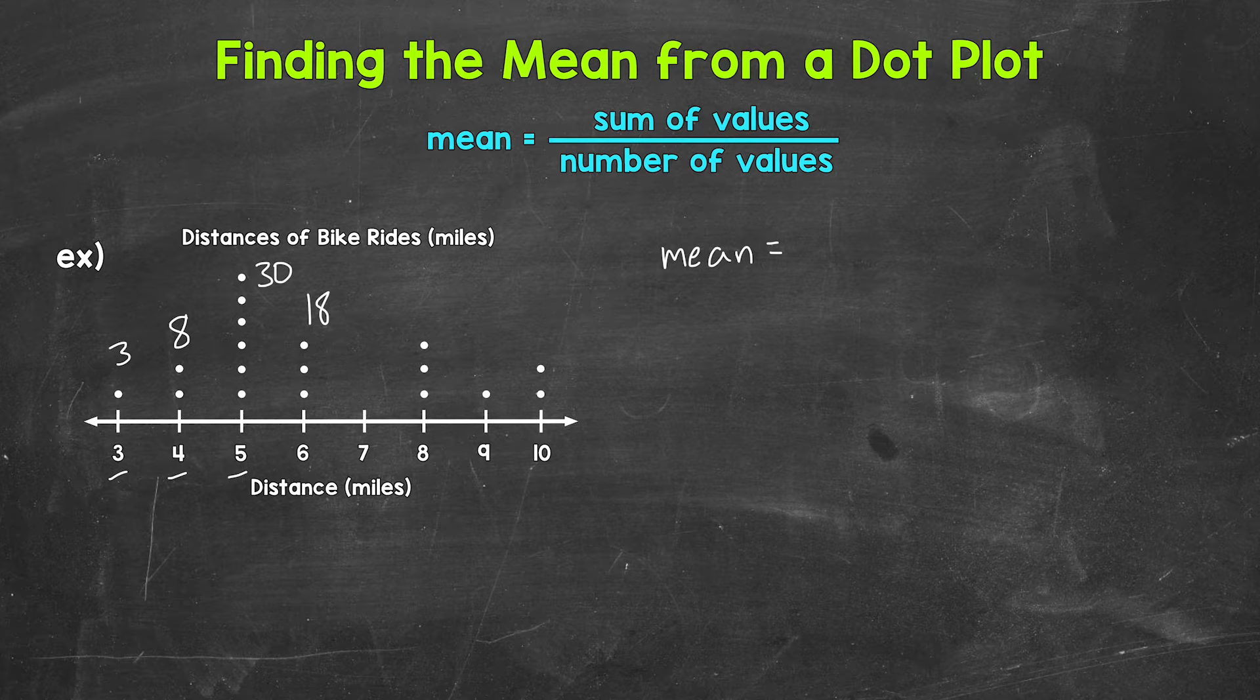We don't have any 7s. Then 3 8s gives us 24. Then we have 1 9, which is 9. And then 2 10s is 20. So by using that dot plot, we can add those values instead of each individual value. And again, this shortens the addition problem.